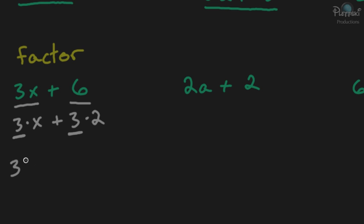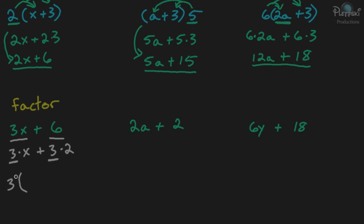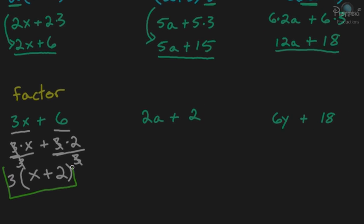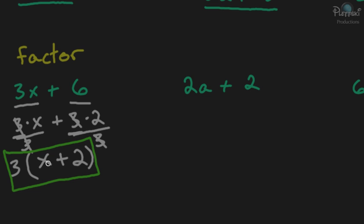We put the 3 out front. Then instead of multiplying each term by 3, we're now dividing each term by 3, because we're taking the 3 away and then multiplying the whole thing. We write a set of parentheses with a plus sign in there, and divide each term by 3. So 3x divided by 3 gives us x, and 3 times 2 divided by 3 — the 3s cancel out and you're left with a 2. So the equivalent expression is 3 times (x plus 2).